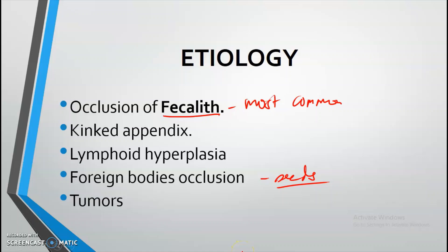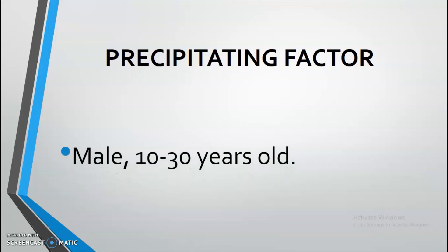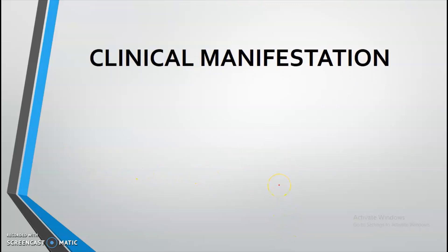Who are more at risk of developing this condition? The precipitating factor for appendicitis is being male, ages 10 to 30 years old. According to studies, a lot of those who develop appendicitis are within this age group and most of them are male. But it doesn't necessarily mean that if you are male aged 10 to 30 you will automatically develop appendicitis — you still need the other etiologic factors present.